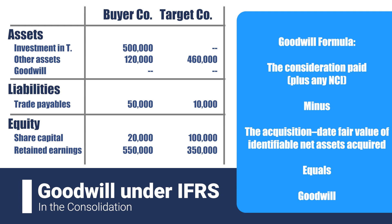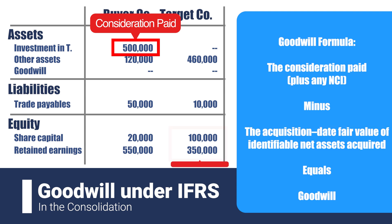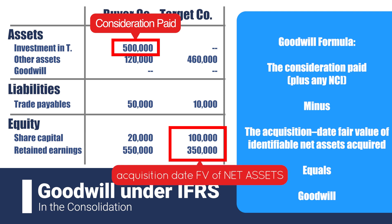Goodwill only arises when the consideration paid is higher than the acquired net assets. The consideration paid is the $500,000 we recorded in the buyer's books. For now, we will ignore the NCI, or non-controlling interests, because we assume a 100% acquisition. However, if you want to know more about NCI, you can watch our separate video about it — the link is in the description. What we are missing from the formula is the acquisition date fair value of the identifiable net assets acquired, which is simply the balance sheet of the business at the time of acquisition. Net assets simply means assets minus liabilities.